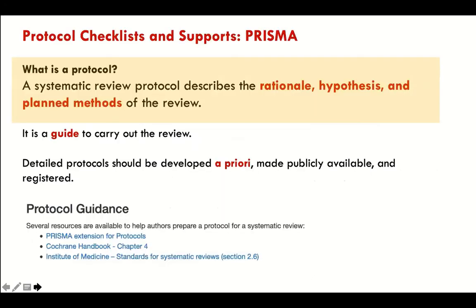The PRISMA and JBI protocols are the primary ones that outline steps. Some of the others also list protocols, but very often the protocols you'll find in OSF or Epistemonicas are derived from either JBI or PRISMA protocols. Cochrane has a protocol as well — that's really the third one. But PRISMA is one of the very first you'll need to go to.